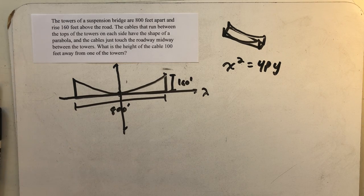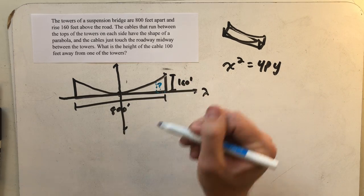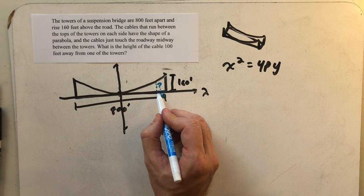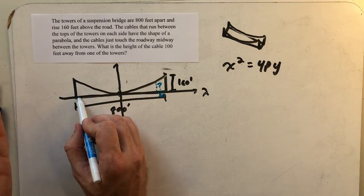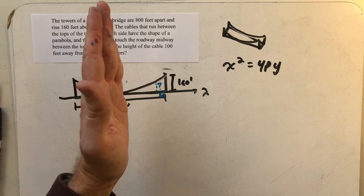The question is, 100 feet from one of the towers, how tall is the cable? So that's 100 feet there, just this little distance between the tower and that point. I could think about it asking the same question over here, but I'm going to get the same height because there's my axis of symmetry.